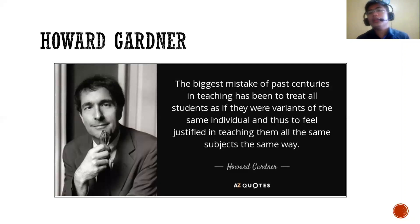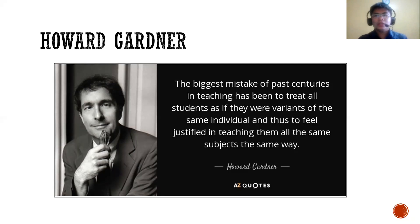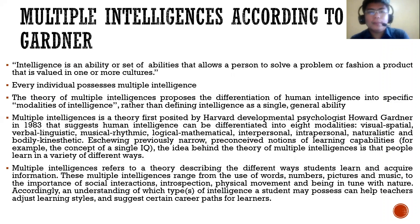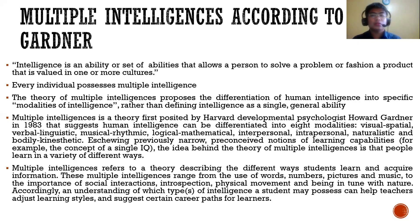Howard Gardner was commenting on the so-called IQ system, which measures individuals using a common IQ test. For Gardner, multiple intelligence — or intelligence — is an ability or set of abilities that allows a person to solve a problem or fashion a product that is valued in one or more cultures. Every individual possesses multiple intelligences. The theory proposes the differentiation of human intelligence into specific modalities rather than defining intelligence as a single general ability.